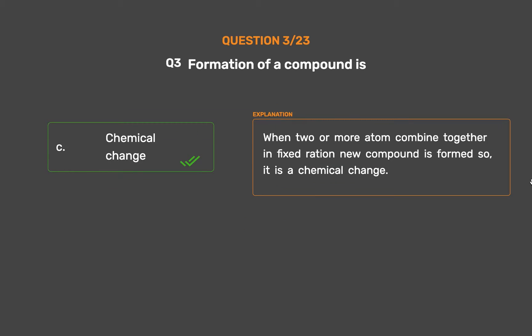The correct answer is Option C: Chemical change. When two or more atoms combine together in a fixed ratio, a new compound is formed, so it is a chemical change.